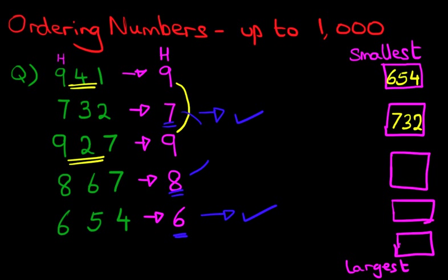Now, we are left with just one number there. That is the eight. That number is eight hundred and sixty-seven. So, we can write this down, eight hundred and sixty-seven. So, we've done three numbers so far.